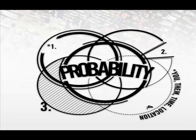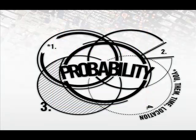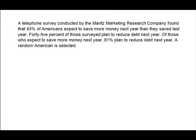What I'm going to do first is work a problem where I'm going to use a matrix — and it's going to be a matrix where you are not given the yes/yes box. I have a telephone survey conducted by Merritt's Marketing Research Company which found that 43% of Americans plan to save more money next year than they saved last year. 45% of those surveyed plan to reduce debt next year. Of those who expect to save more money next year, 81% plan to reduce debt.